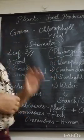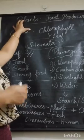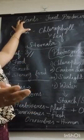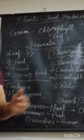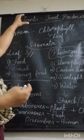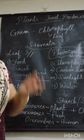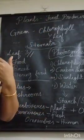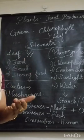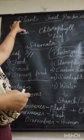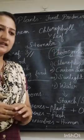Plants give us food — fruits, leaves, vegetables — and they also give us oxygen. We breathe in oxygen and give out carbon dioxide, which plants use for photosynthesis. So each and everyone are dependent on each other.